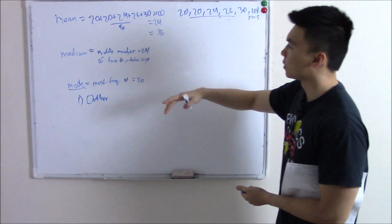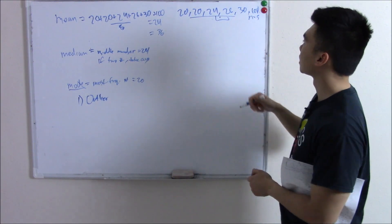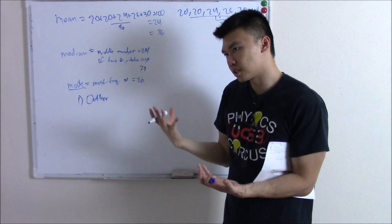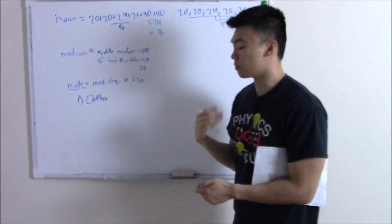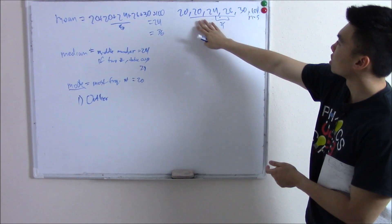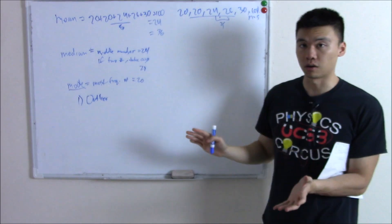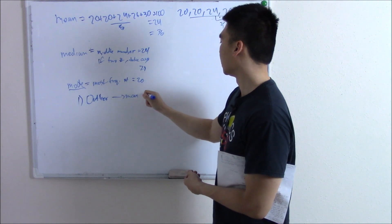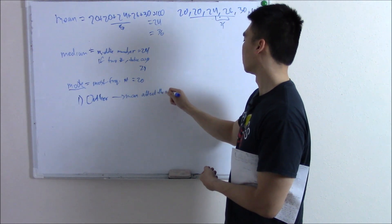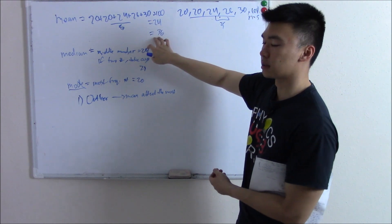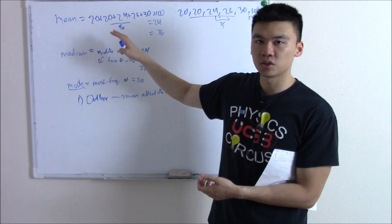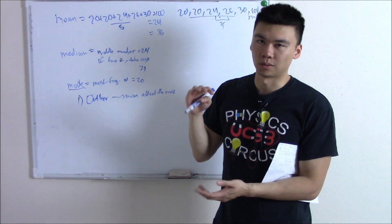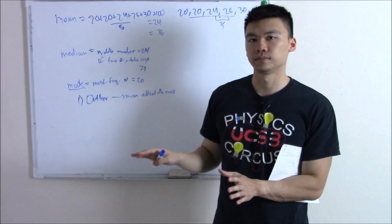How about your median? We line everything up and take the middle number. Here we have two middle numbers, so we just take the average — that's 25. So now it's 25, a change but not much of a change. How about your mode — your most frequently occurring number? Still 20. Hasn't changed at all. So on outliers, your mean is affected the most. We saw how much your mean changed by adding in that outlier, because you have to factor it into your new equation.